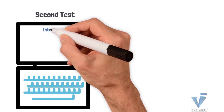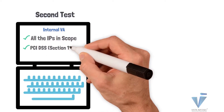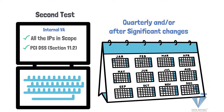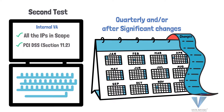The second is your internal vulnerability assessment of all IPs in scope of your card data environment, again under 11.2 of PCI DSS. This also has to be done quarterly and/or after significant changes. This internal VA can be done by anybody — many companies engage us to do it, so drop us a line if you're interested. You don't need an ASV to do it; you could even do it yourself, though that's not recommended because you need an unbiased approach.